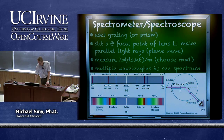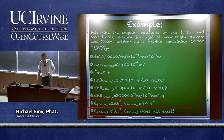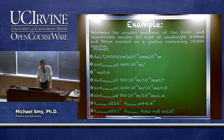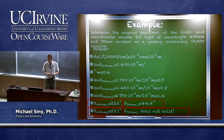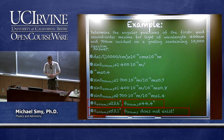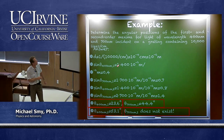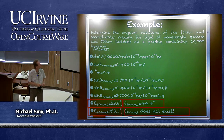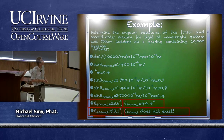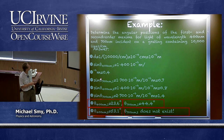Let's determine the angular positions of the first and second order maxima for wavelengths of 400 nm and 700 nm incident on a grating with 10,000 lines per centimeter. The spacing between neighboring lines is the inverse of 10,000 per centimeter, giving 10⁻⁴ centimeters or 10⁻⁶ meters — 1,000 nanometers. Using D sine theta equals M lambda: